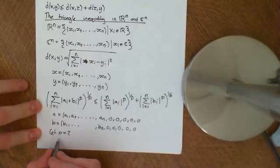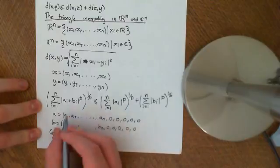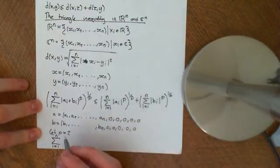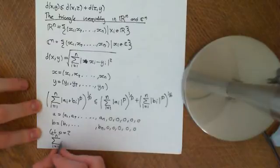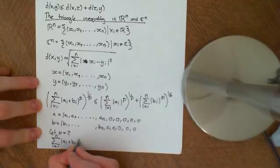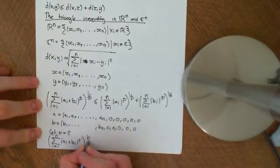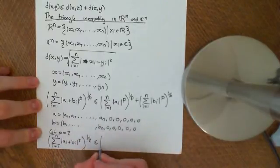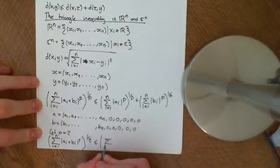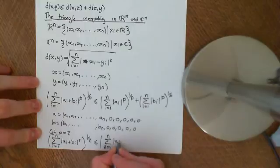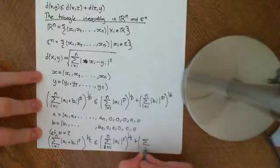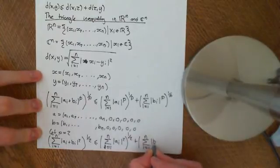And we get that Minkowski's inequality reduces down to the statement that the sum i equals 1 to n, whatever n is. So n is just the dimension, well, n is going to be our dimension of our Euclidean or unitary space, of the modulus of (aᵢ + bᵢ) squared, all of that square rooted, or to the power of a half, is less than or equal to the summation i equals 1 to n of the modulus of aᵢ squared, square rooted, plus the summation i equals 1 to n of the modulus of bᵢ squared, all of that square rooted.